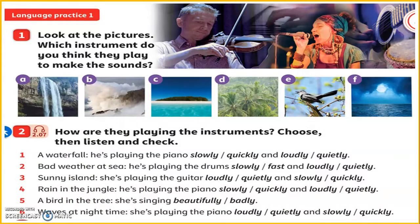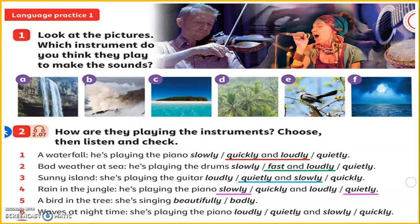After listening, you are going to tell me the answers. Number one — 'A waterfall.' Is he playing the piano slowly, quickly and loudly, or quietly? That's right: quickly and loudly. Number two — 'Bad weather at sea.' Is he playing the drums slowly, fast and loudly, or quietly? Fast and loudly. Number three — 'Sunny island.' Is she playing the guitar loudly, quietly and slowly, or quickly? Quietly and slowly. And number four — 'Fury in the jungle.' Is he playing the piano slowly and quietly, quickly and loudly, or quietly? Slowly and quietly.